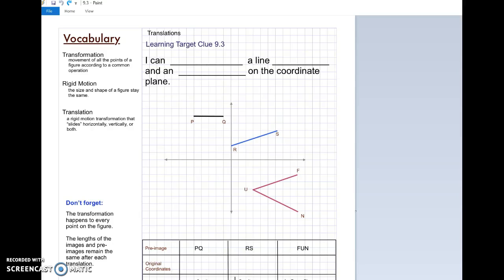Greetings detectives, Mrs. McKay here. It's time for us to get started on learning target clue nine, three out of case nine, which is called Crafty Constructions. Today's lesson is kind of a simple one, so hopefully we'll get through it quickly. It's all about translation, so we're going to start by filling in our learning target clue: I can translate a line segment and an angle on the coordinate plane.